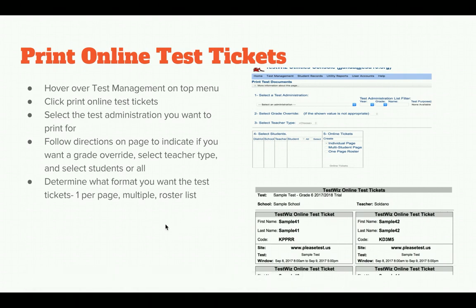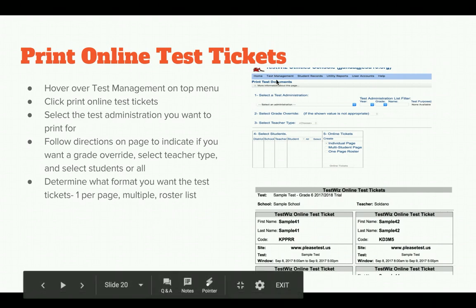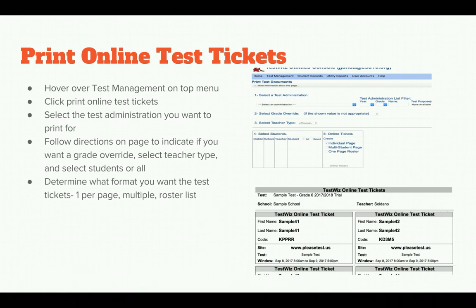You will then need to print online testing tickets. Hover over Test Management at the top menu and drop down to Print Online Test Tickets. Select the test administration you want to print for — you'll have a specific list. Go through the year, grade, and name. Follow directions on the page to indicate type: grade override, teacher type, individual student, or whole class. Determine the ticket format: individual pages, multiple tickets per page, or a roster list for creating your own password tickets.